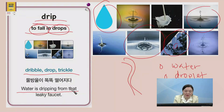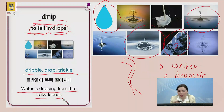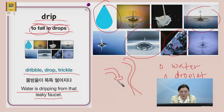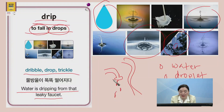So, water is dripping from that leaky faucet. If we said water was trickling, it would mean 조금 흐리고 있다. 근데 dripping이라는 말을 하니까, 그 leaky faucet — 수도꼭지에서 물방울이 똑똑 떨어지다. 천천히. Drip이라는 거는 빠르게 흐리는 게 아니라, 천천히 내리는 거예요. So, water is dripping from that leaky faucet.